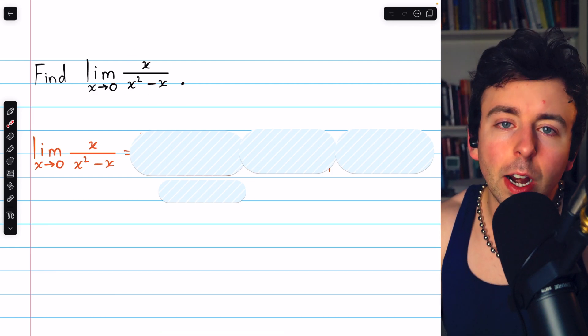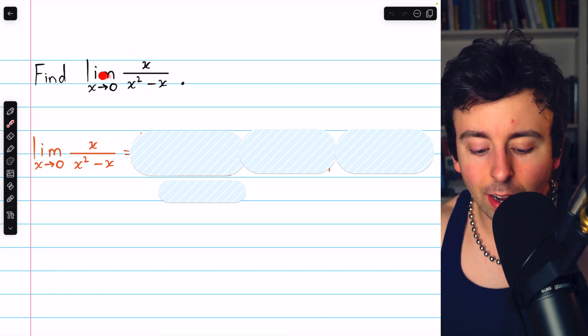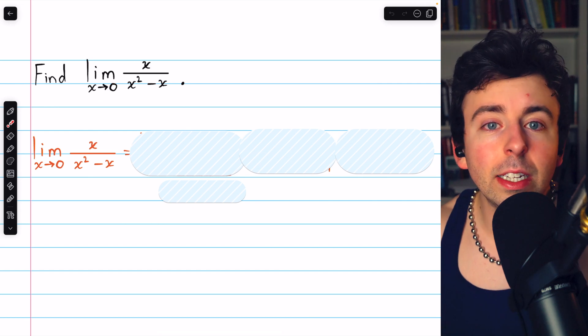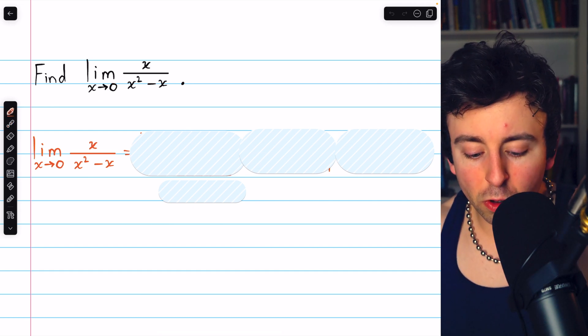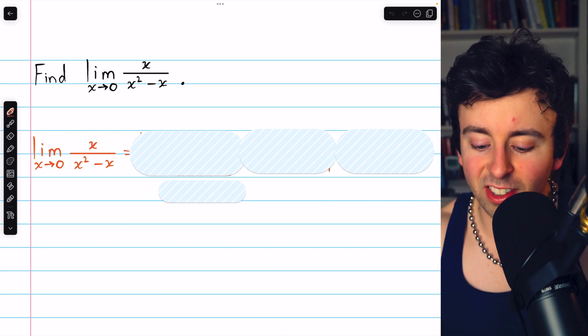To find the limit of x over x squared minus x as x approaches 0, all we need to do is factor. You should check whether or not we can just plug 0 in.